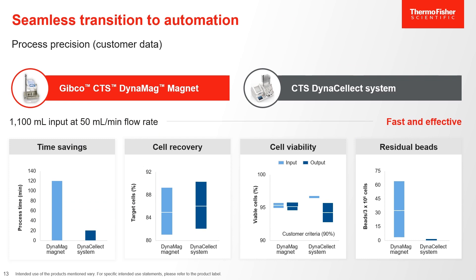Now to make these data points a bit more relative, let's compare DynaSelect to a current product on the market, the Gibco CTS DynaMag, our manual de-beading platform. When processing 1,100 milliliters of input material and running DynaSelect at 50 milliliters per minute, the advantages of the DynaSelect system become much more tangible. Looking at time saved compared to the manual method, DynaSelect can process the same amount of material in a fraction of the time, while the continuous flow removes any need to break down and reset the kit to process the remaining volume. As shown in the two middle plots, cellular viability and recovery yields are maintained or even improved when compared to the DynaMag. And finally, virtually no beads are observed in the final product, checking the box for regulatory requirements and providing peace of mind that you have produced a robust, safe therapy for your patients.